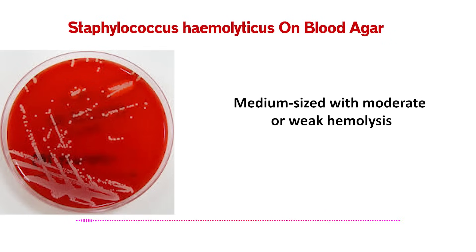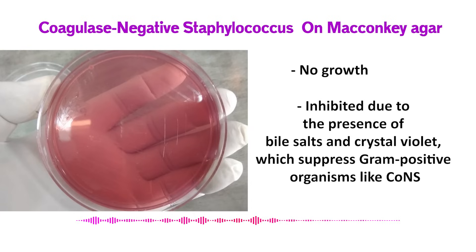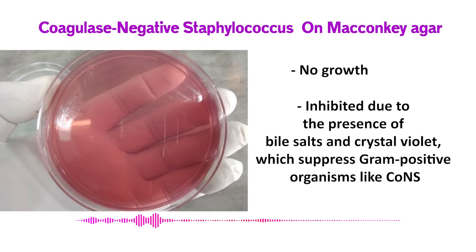SBA gives us a lot: color, texture, size, and important variations — pigment for saprophyticus, hemolysis for haemolyticus. Now let's switch to MacConkey agar. Here, no growth tells you something important. CoNS are gram-positive bacteria, and MacConkey contains bile salts and crystal violet, which inhibit gram-positives. So you shouldn't see anything grow. If you do get growth on MacConkey that looks like staph, it's almost certainly not a CoNS. It's a very effective rule-out test.